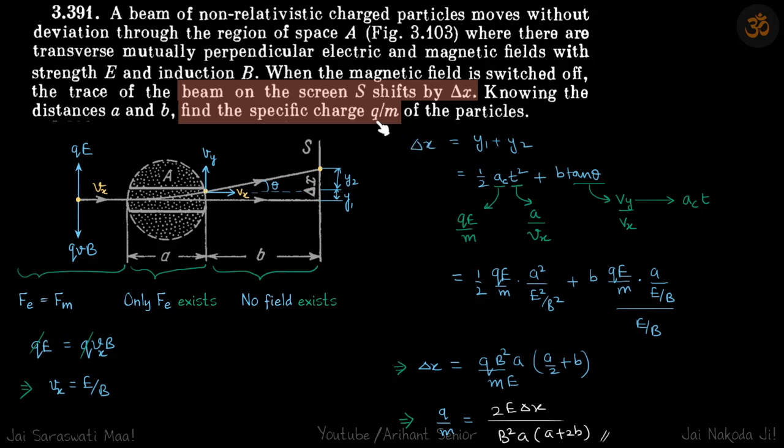So we need to find that if the beam on the screen has shifted by delta X, find the specific charge Q by M. So we have a screen placed at a distance B from the second region, and from the original path of the beam, it is shifted by delta X. So we need to find what is Q by M.